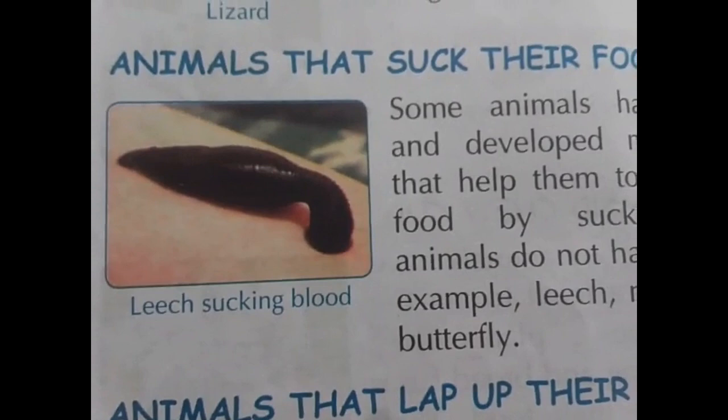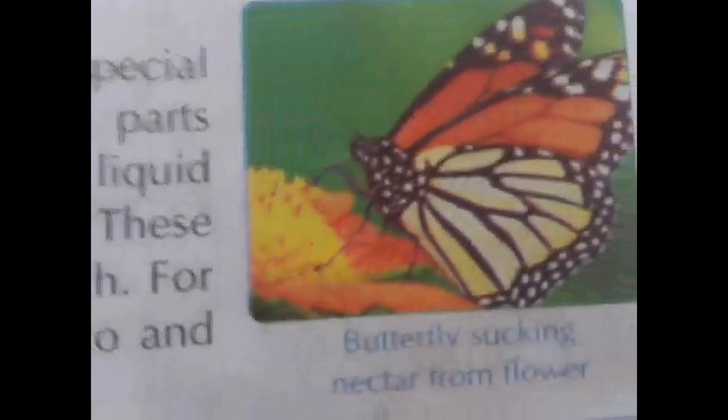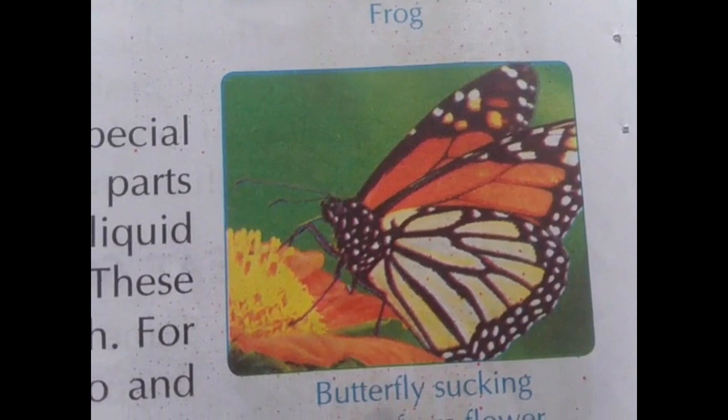Animals that suck their food: some animals have special, developed mouth parts that help them to take liquid from material by sucking. These animals don't have teeth. Examples are leech and mosquito. The leech sucks blood, and the butterfly sucks nectar from a flower. They do not have any teeth but have special developed mouth parts to take liquid.